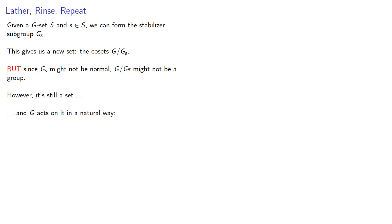If I take an element of G, then G acts on a coset of the stabilizer by gA acting on the stabilizer. And that means this quotient, well, I'll call it a quotient set, is actually another G-set.